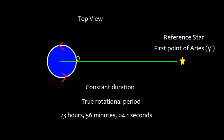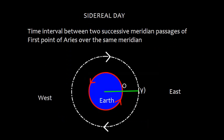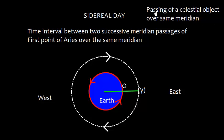So now we can define a day, and this day is a sidereal day. This is the time interval between two successive meridian passages of First Point of Aries over the same meridian.